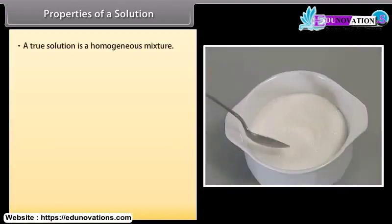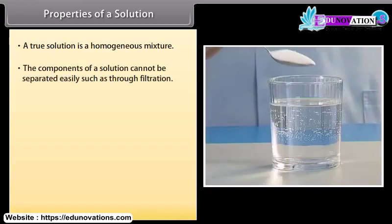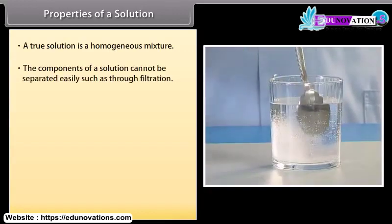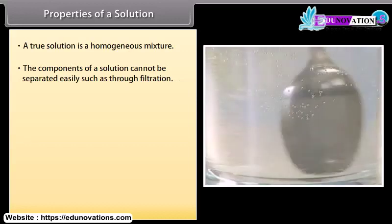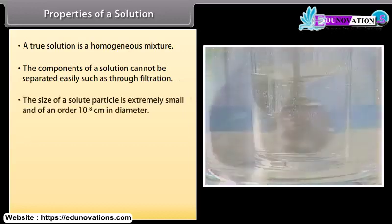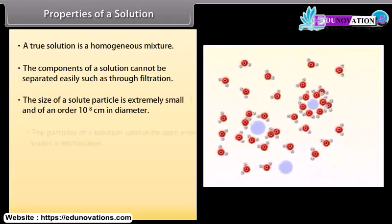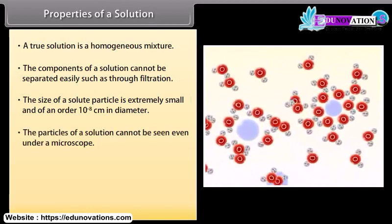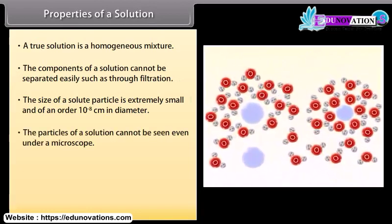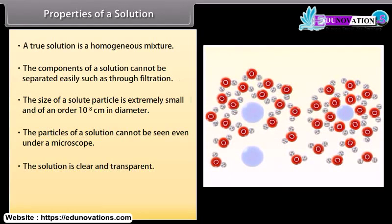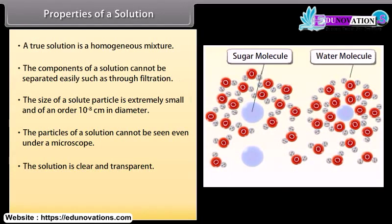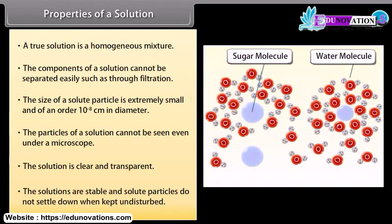Properties of a solution: A true solution is a homogeneous mixture. The components of a solution cannot be separated easily, such as through filtration. The size of a solute particle is extremely small, of the order 10⁻⁸ cm in diameter. The particles of a solution cannot be seen even under a microscope. The solution is clear and transparent, and solute particles do not settle down when kept undisturbed.